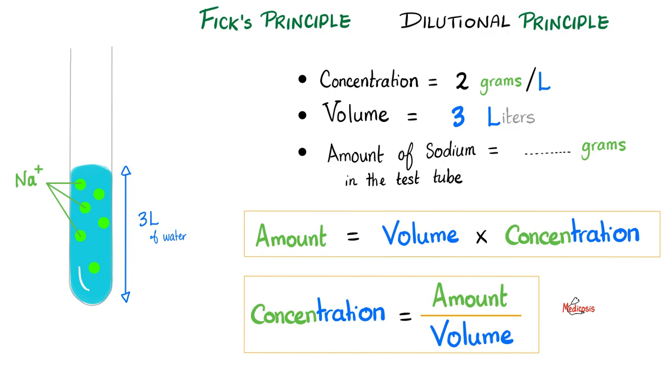Amount equals volume times concentration. Therefore, concentration equals amount over volume. So when I say that my serum sodium concentration is about 140 milliequivalents, that's the amount over liters, this is the volume. And what's the 140? It's the concentration. Concentration equals amount over volume. That's the Fick principle.